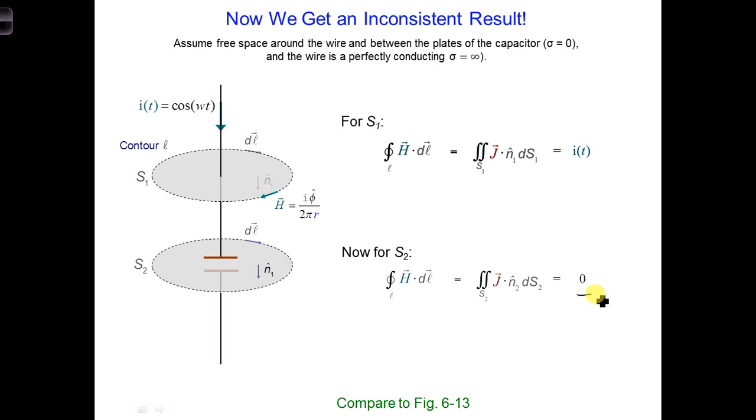Now, for S2, we would get zero, whereas up here we got I. So now we have an inconsistent result. Since the capacitor is in the same circuit as the section of wire above it, we know there must be current flowing through the capacitor. Because we must have continuity of current. But this is not accounted for in our Biot-Savart result. So we have a clue now that something is missing in our equations.